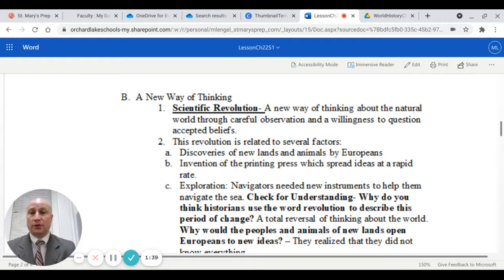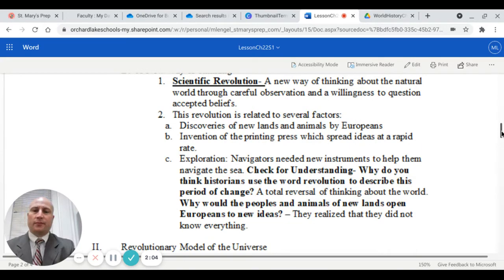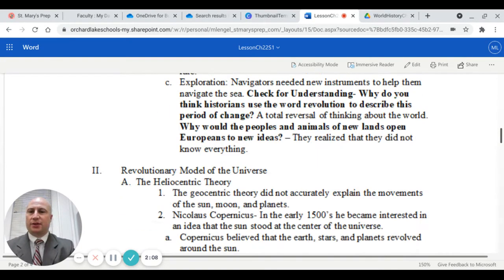Number one, discoveries of new lands and animals by Europeans, especially in the Americas. The invention of the printing press, which spread ideas at a rapid rate. And exploration. Navigators needed new instruments to help them navigate the sea. This is a big difference from what people looked at before and all these new ideas. I think what happened here is that people started to realize they really didn't know everything. And so they needed to take a look at how they viewed science.